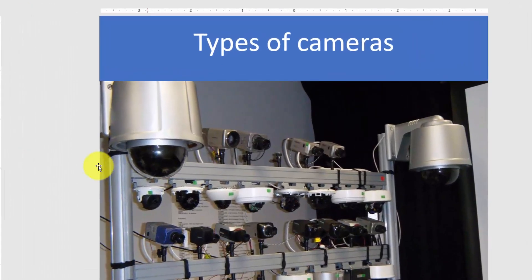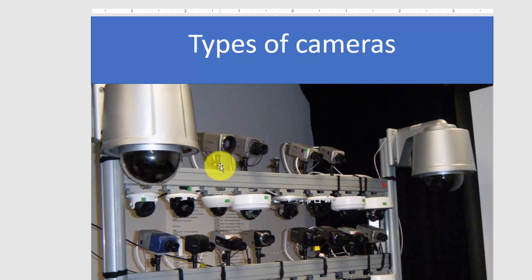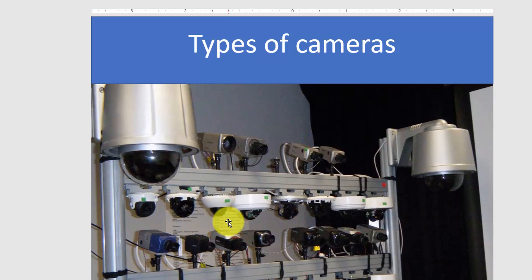Let's get started with types of cameras. It's a lab — a Samsung lab where I got trained years ago. There are different types of cameras here. I'm not talking about analog and IP cameras — I'm talking about types of cameras related to the format of the camera. It doesn't matter if it's IP or analog. You can have a PTZ camera using analog or IP technology, box cameras using either, and the same with dome, mini domes, etc.